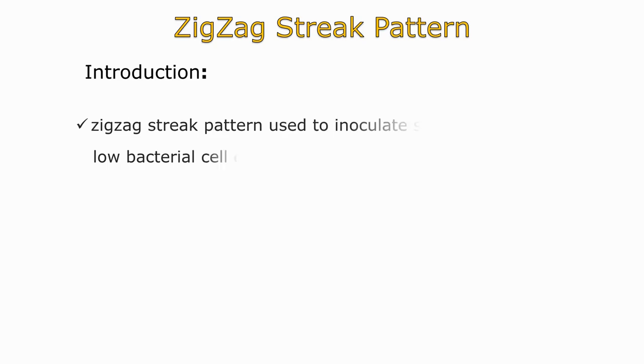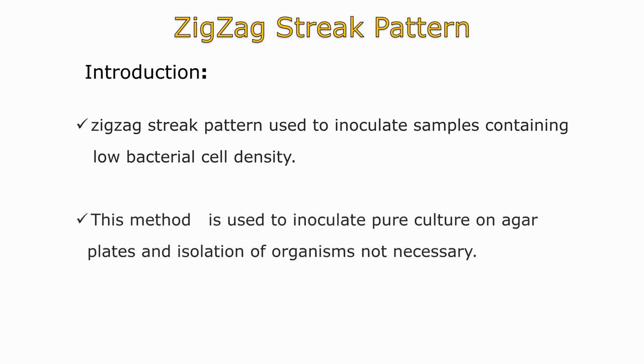Zigzag streak pattern is used to inoculate samples containing low bacterial cell density. This method is used to inoculate pure culture on agar plates and isolation of organisms is not necessary.